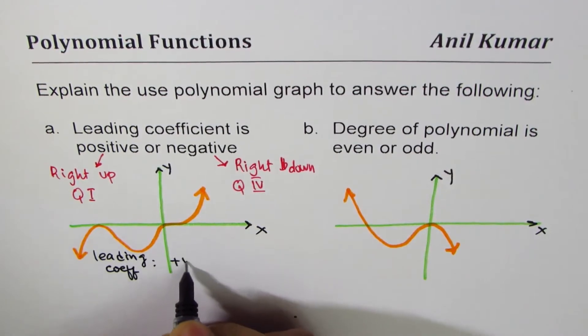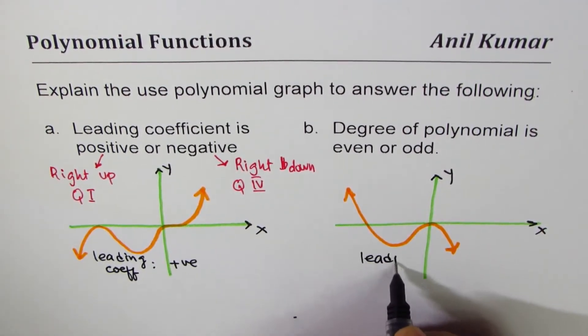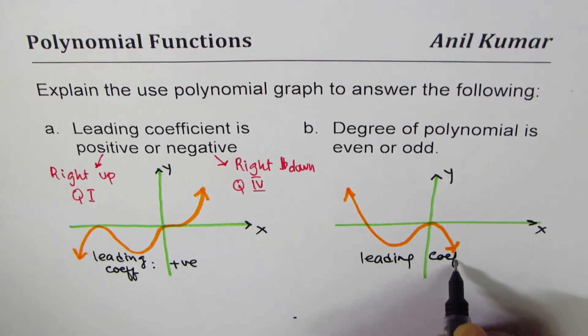In this case we can say leading coefficient is negative. So that is how we figure out what could be the leading coefficient.